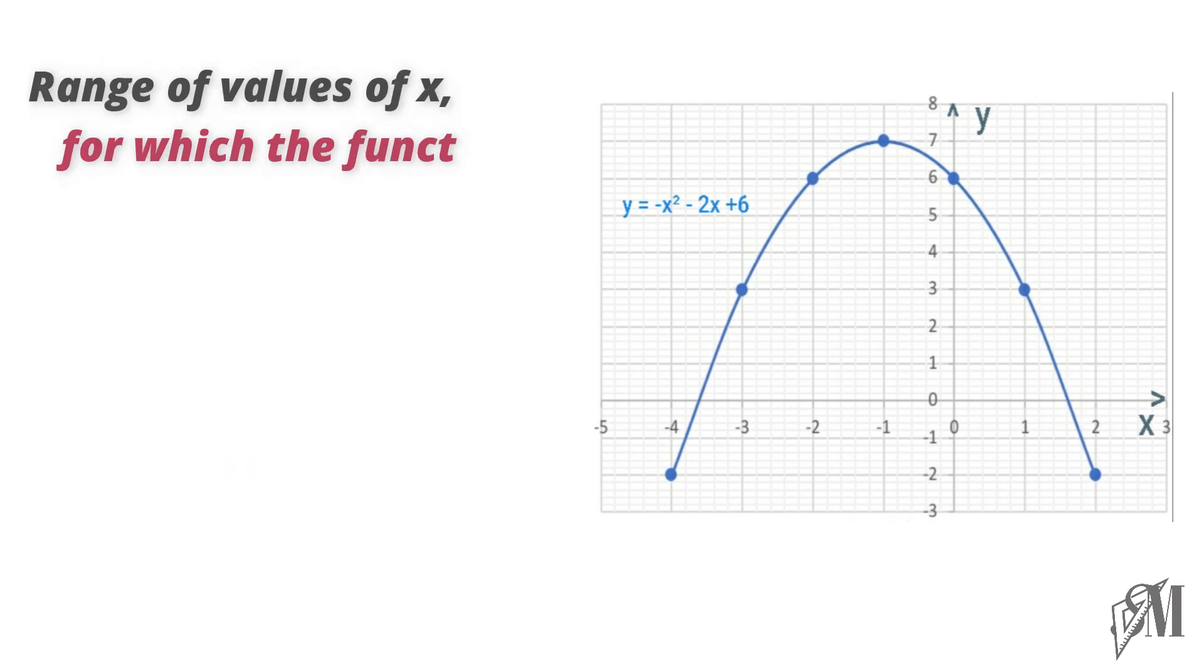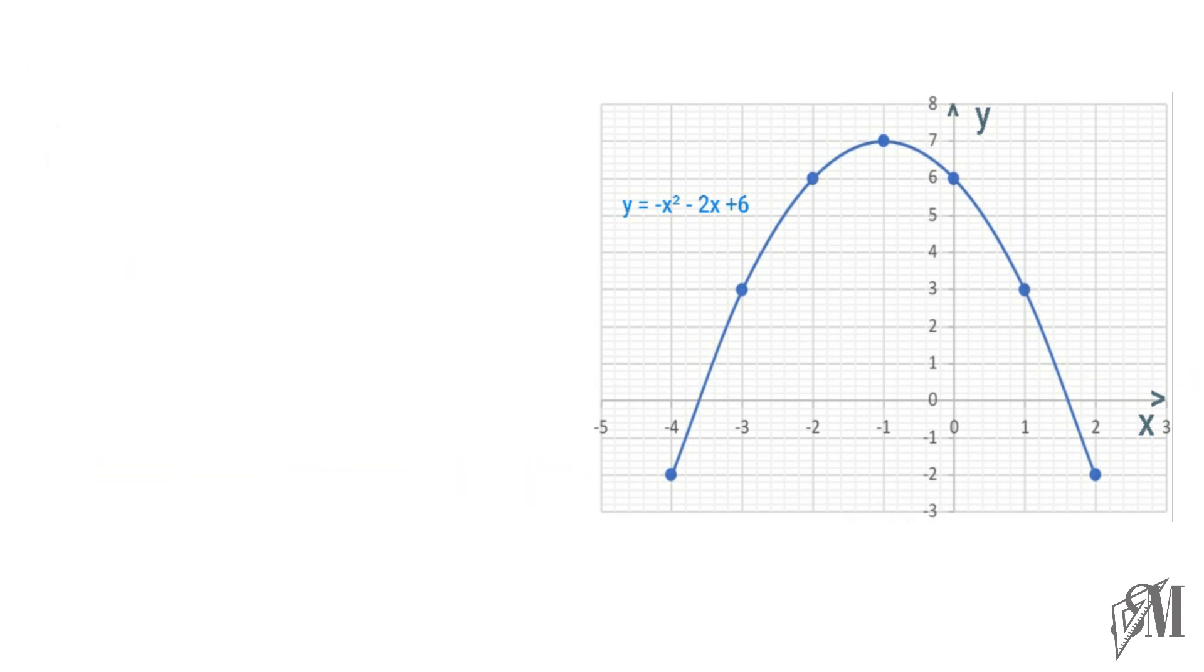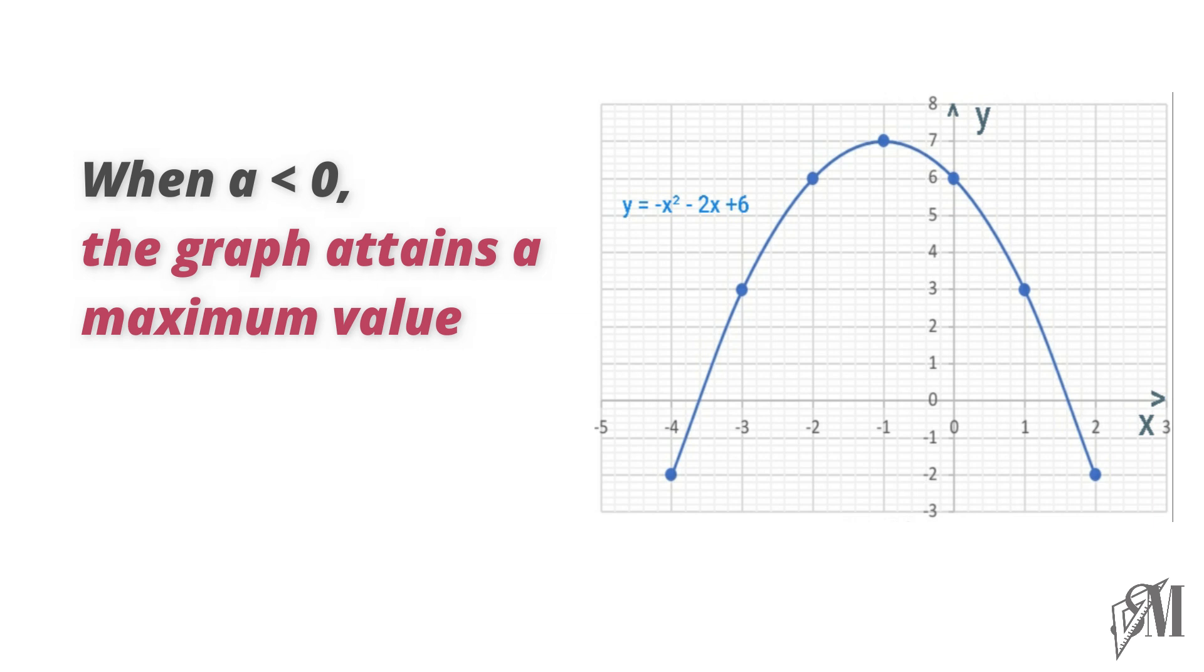The range of values for which the function is positive is when x lies between minus 3.6 and 1.6. The function has become negative when x is less than minus 3.6 and when x is greater than 1.6. The roots of the function are minus 3.6 and 1.6. From this graph we can conclude that the function attains a maximum when a is less than 0.